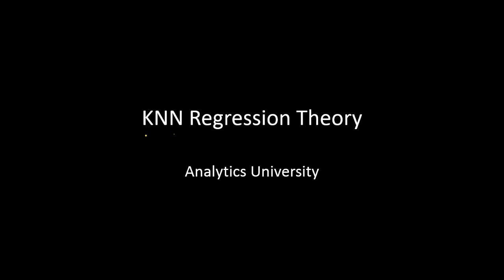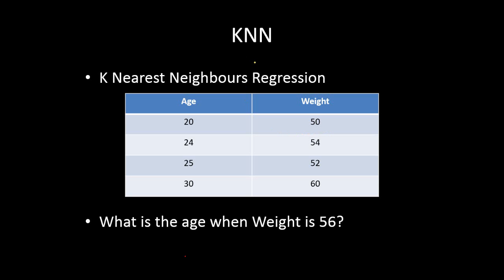In this video, I am going to talk about KNN regression. What is KNN regression? KNN stands for K Nearest Neighbors, and this is a special type of regression which takes K nearest training data points and finds out the prediction. It is known as K Nearest Neighbors regression. Let us try to understand what is KNN regression with the help of an example.